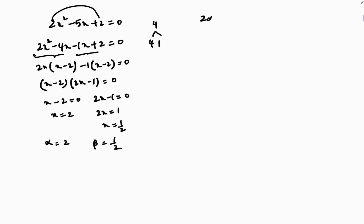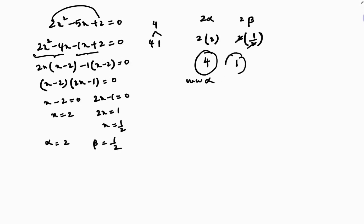But they want the polynomial for 2 alpha and 2 beta. So 2 times alpha equals 2 times 2 equals 4, and 2 times beta equals 2 times 1 by 2, which equals 1. So the new zeros are 4 and 1.